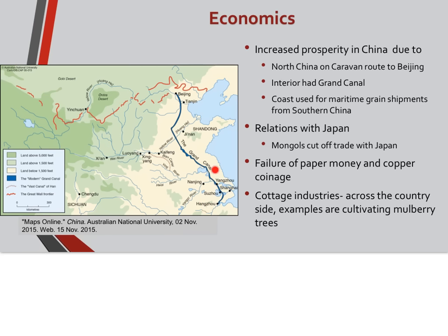Along the coast — still very important today — maritime grain shipments moved from southern China back and forth. However, economics did not improve with Japan, because after their failed invasions the Mongols cut off trade with Japan, causing Japan to become somewhat isolated. There was also failure of paper money and copper coinage, which the Mongols had tried to impose on the people. There was a rise in cottage industries across the countryside, such as the cultivation of mulberry trees.